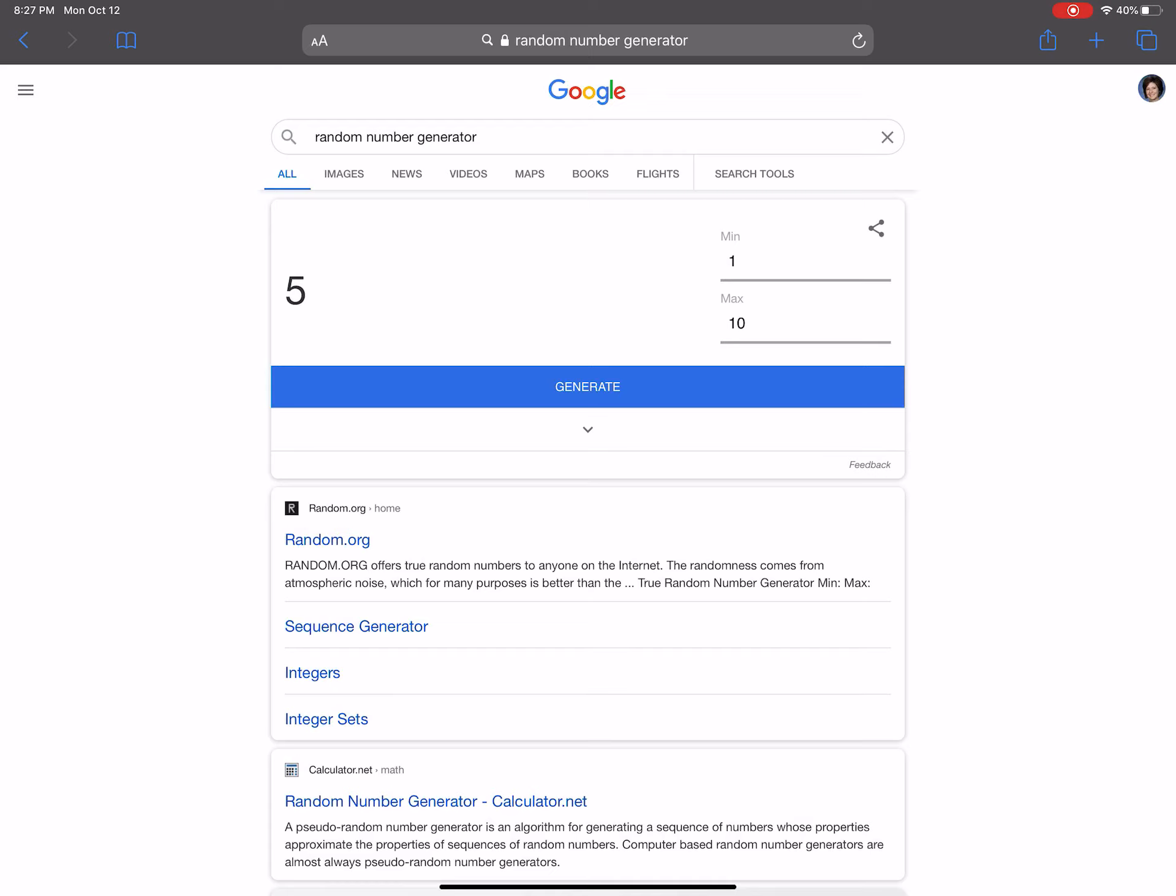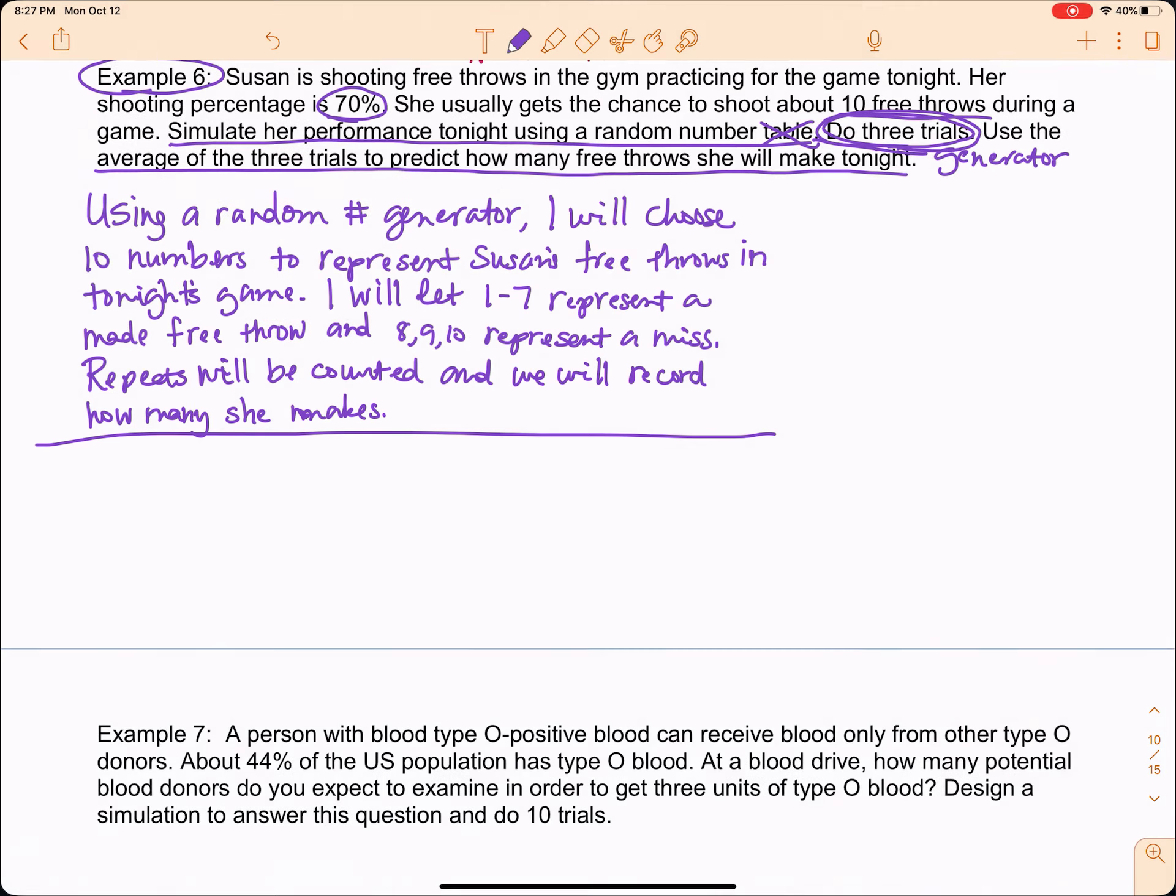That's my next 10 numbers so now I'm going to run my third trial. So I've got a 5, 6, 1, 5, 4, another 5, 6, 8, 3, and 6. Those are my three trials so we'll go back to our notes here.